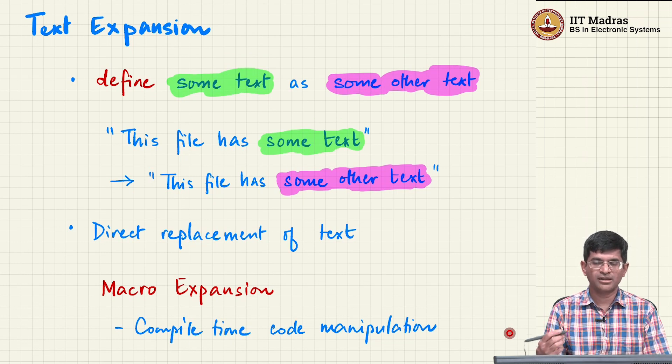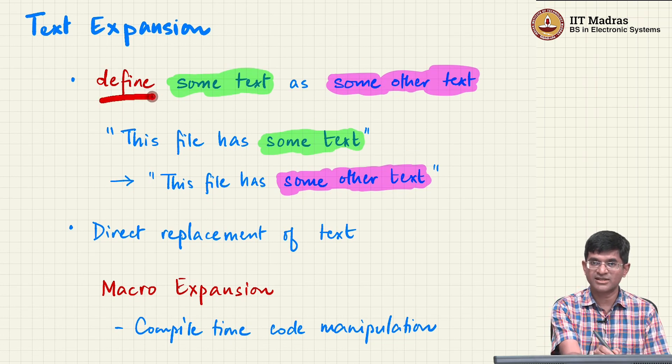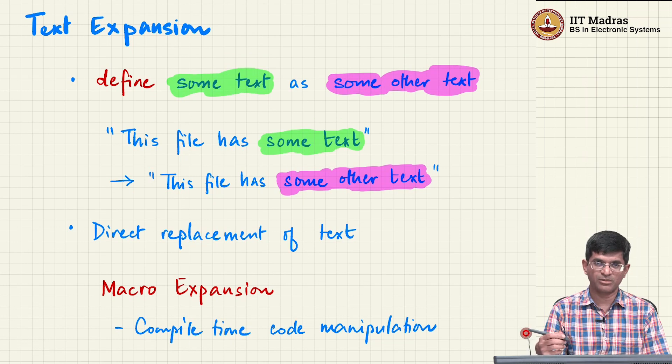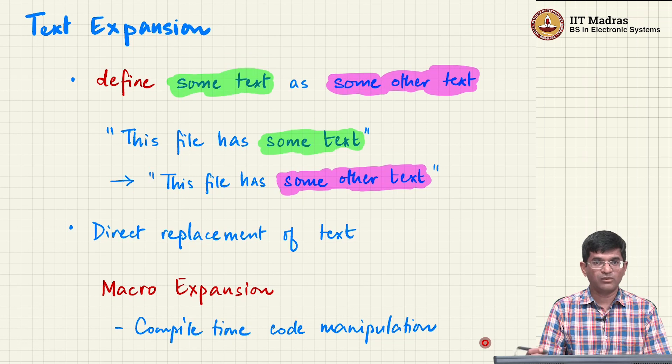You need to understand that a macro expansion or a text substitution or text expansion as we are mentioning here is not by itself performing a computation. It is not even a set of instructions in the programming language. In fact, hash define has its origins completely outside of C. The actual preprocessing is done by another program which is not part of the C compiler by itself, which is why it is called a preprocessor.